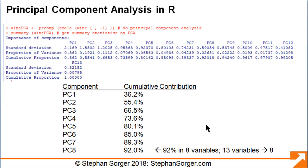We ask R to give us the summary statistics of the PCA analysis using the summary function. The summary shows us the cumulative proportion that each principal component (PC) contributes. From the R output, we see that PC1 gives us 36.2% cumulative contribution — meaning PC1 has the power to explain 36.2% of the variance of the data. PC2 takes us to 55.4%, PC3 takes us to 66.5%, and so forth. Continuing this, we see that we can explain 92% of the variance from just 8 variables. Therefore, we have reduced the number of variables from 13 to 8, with only an 8% loss of fidelity.